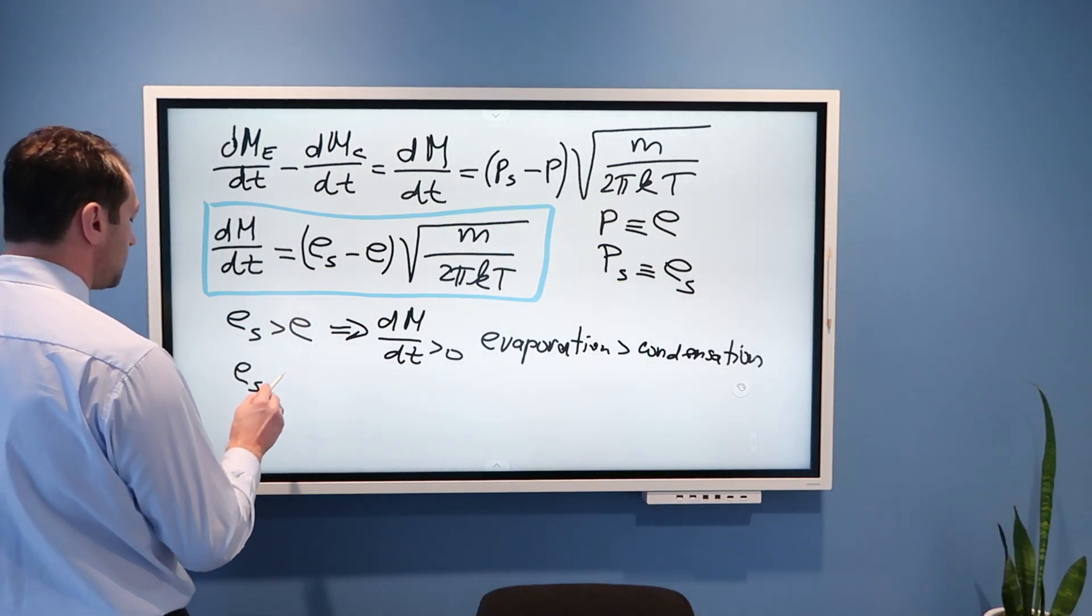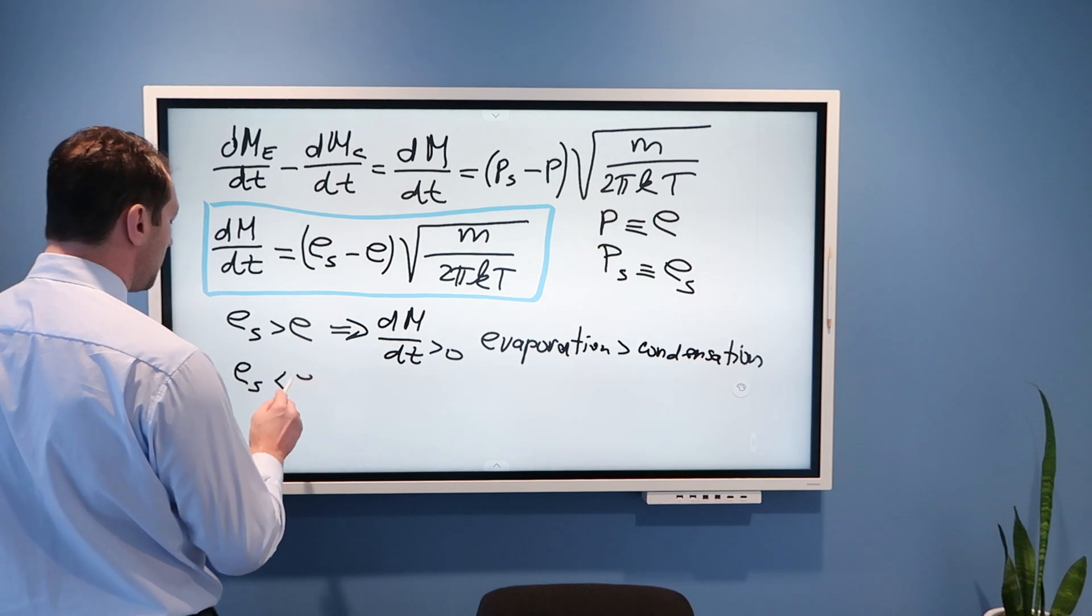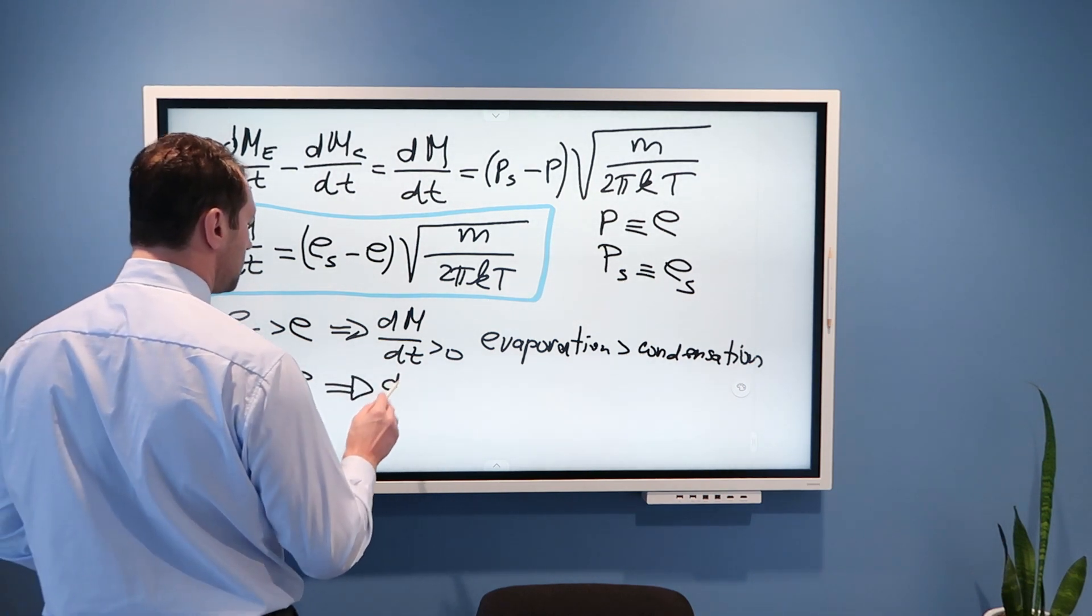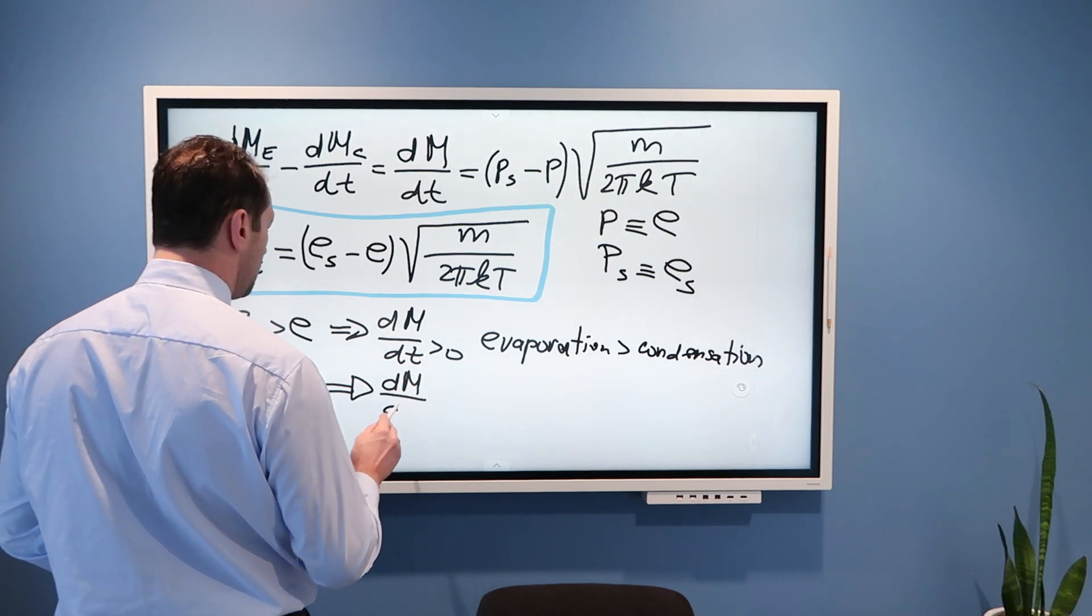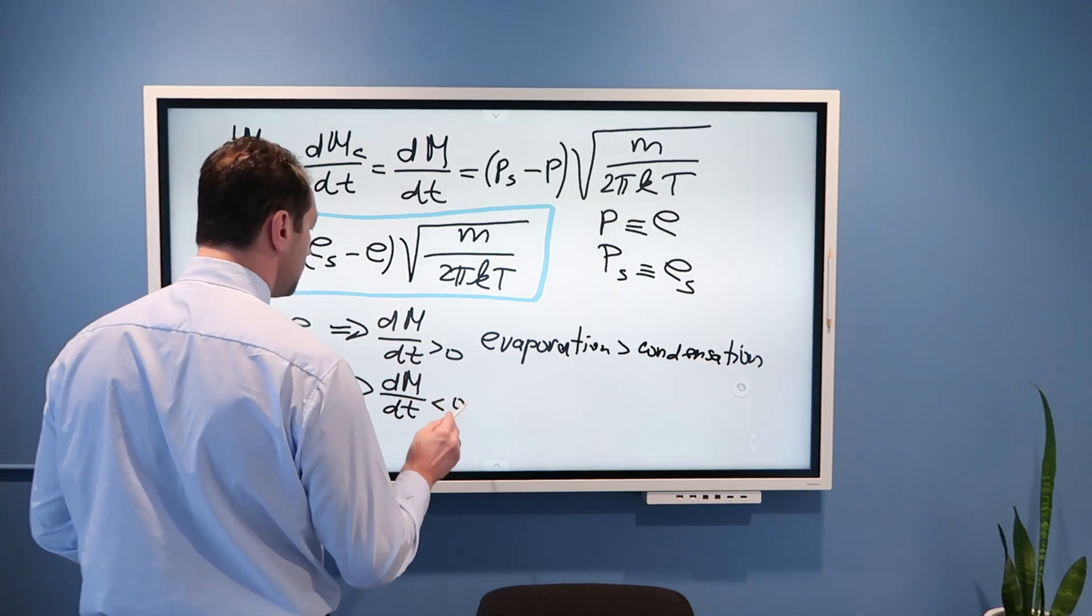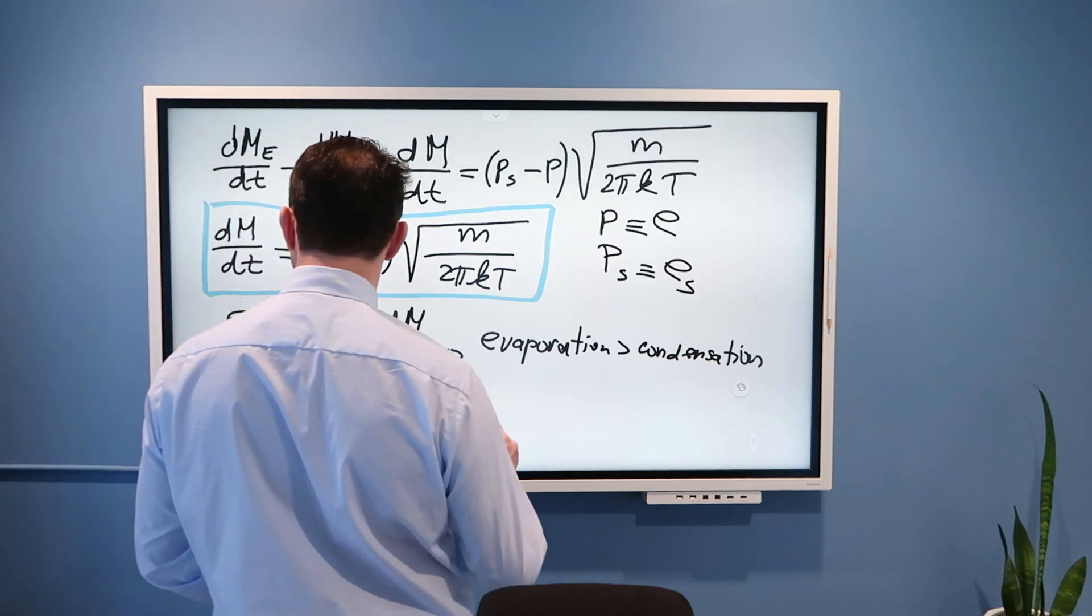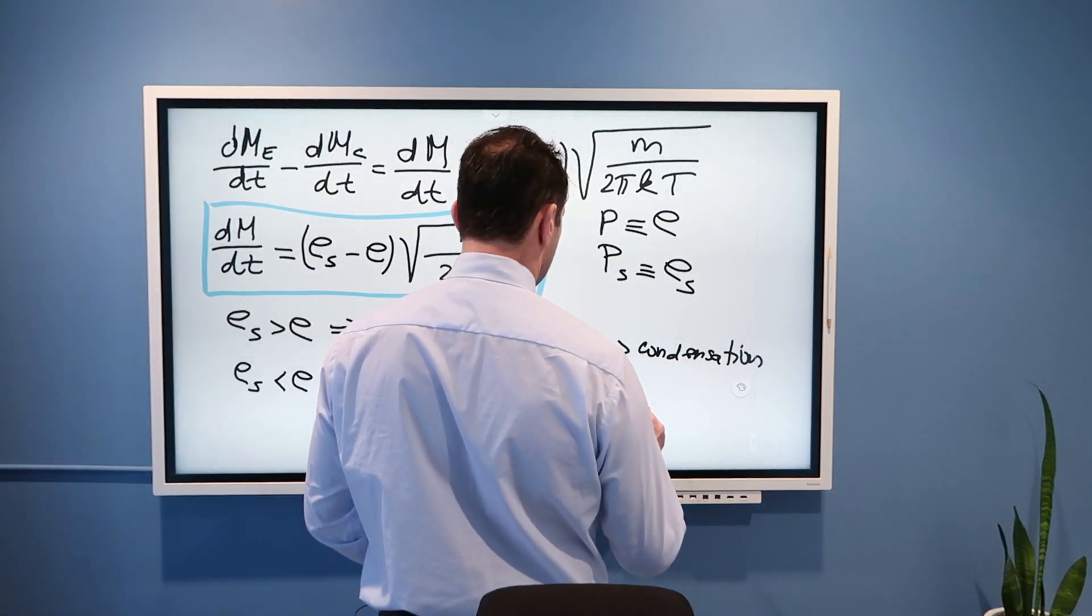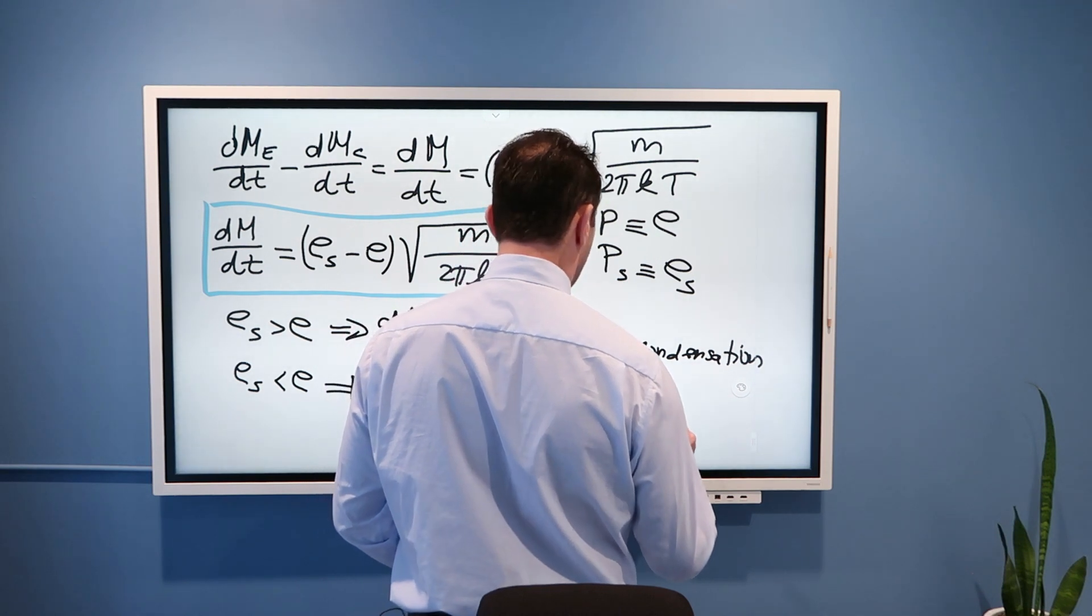we will have net rate of, so dm/dt will be positive, and that means evaporation is larger than condensation. We also see here, if ES is smaller than E, that means dm/dt is smaller than 0, and that means condensation is larger than evaporation.